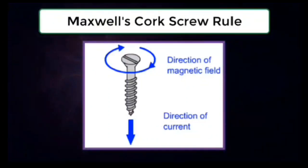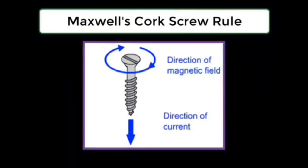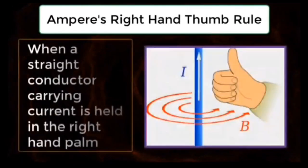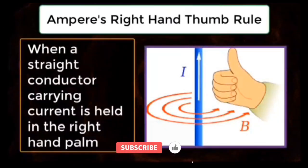Maxwell's cork screw rule: imagine a right-handed cork screw advancing in the direction of current. The direction of rotation gives the direction of lines of force. Ampere's right hand thumb rule: when a straight conductor carrying current is held in the right hand palm